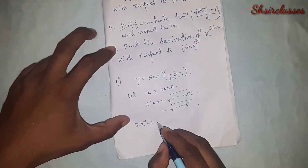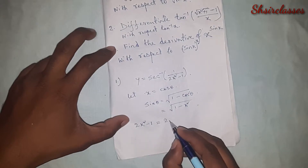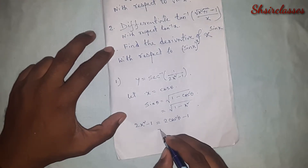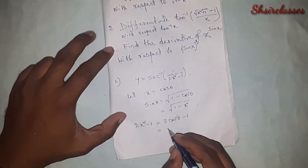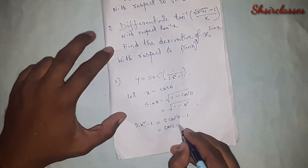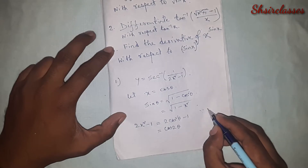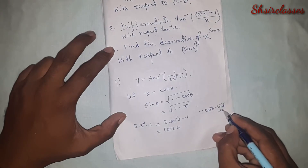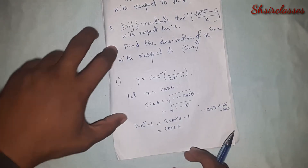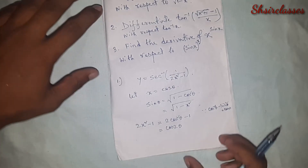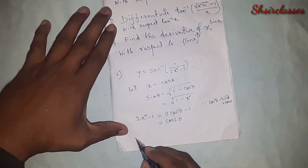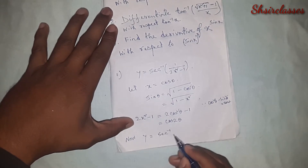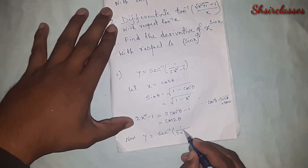2cos²θ minus 1 — we can write this as cos 2θ, because cos²θ minus sin²θ equals cos 2θ. From this we can reduce: 2x² minus 1 equals cos 2θ.